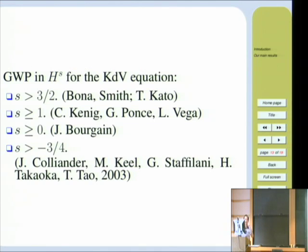And the global well-posedness is automatically obtained by combination with the conservation laws, except when s is less than zero, because there's no conservation law. So, in 2003, they developed some, like the I-method, to prove the global well-posedness below L^2. They developed some almost conserved quantities.